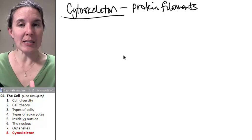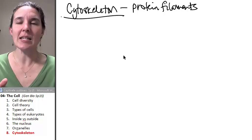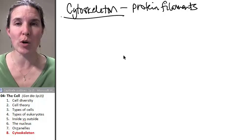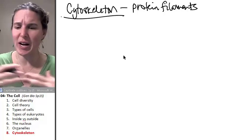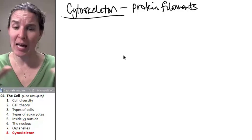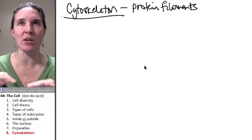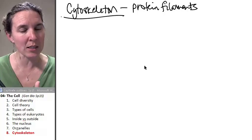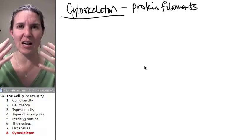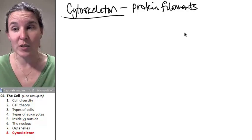So the cytoskeleton is basically a diverse network of protein filaments. And we have multiple sizes and we can actually break them down and label them and classify them and memorize all those names. And it's not so important to me that you know the differences between the types of cytoskeletal filaments, but that you understand the general concept of how do they work? What do they do? So they're made out of protein.